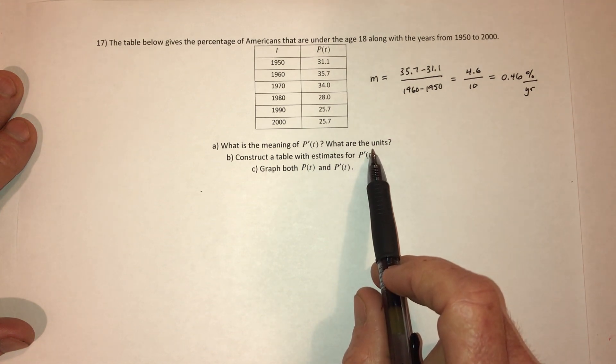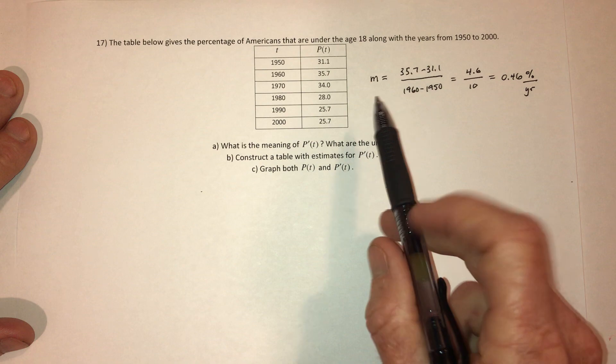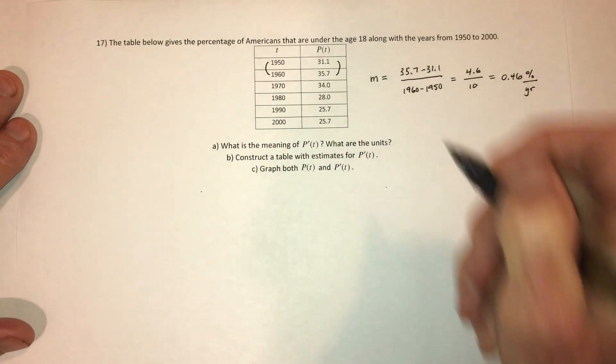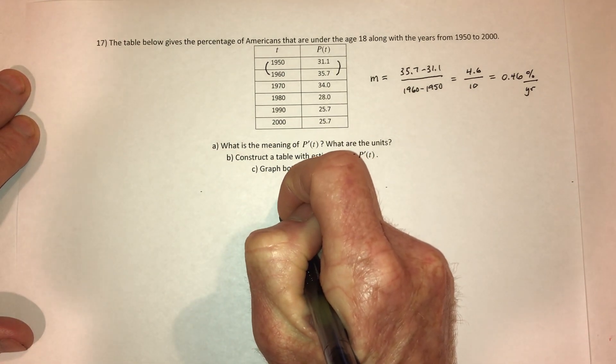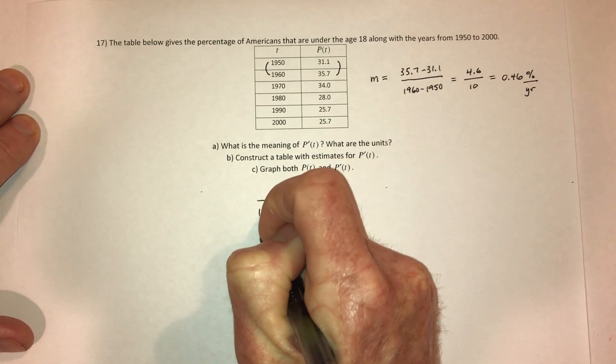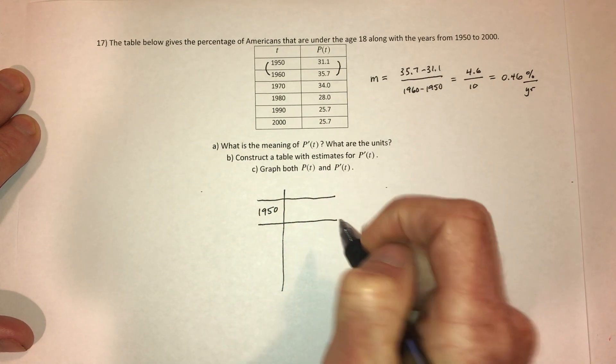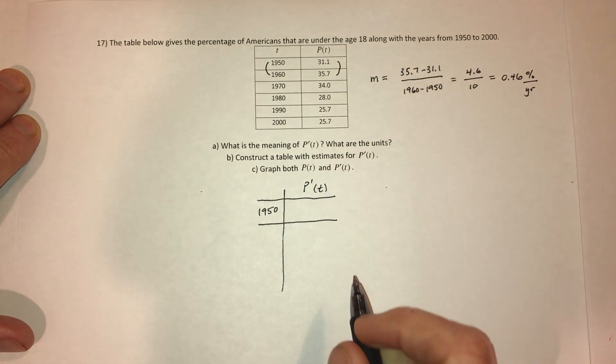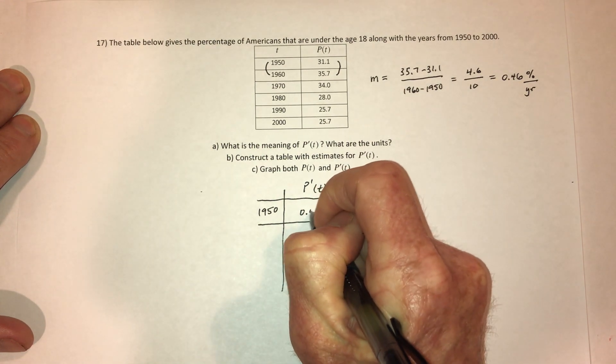So that takes care of part A. Construct a table with estimates for, so in other words, do this, but do it all the way down the table. So we did this pair from 1950 to 1960. And then I'm going to label that as 1950, although it really means from 1950 to 1960. And then right here is going to be the derivatives. So the first one I already did, that is 0.46.